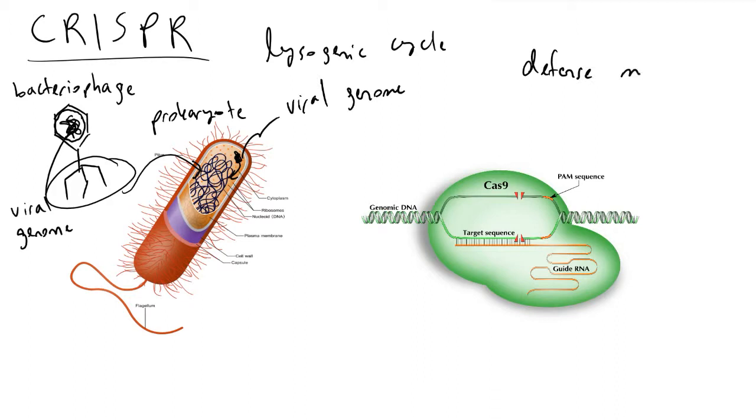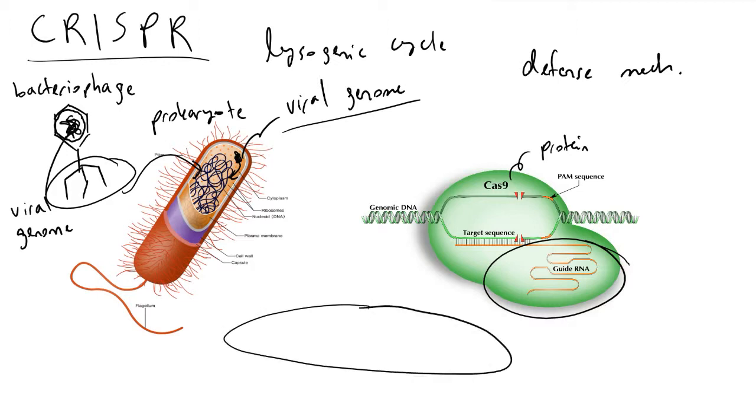CRISPR is a combination between guide RNA as well as a protein called Cas9. The purpose of the guide RNA is to recognize viral genomes after they've made their way into the host genome. Prokaryotes have circular genomes.